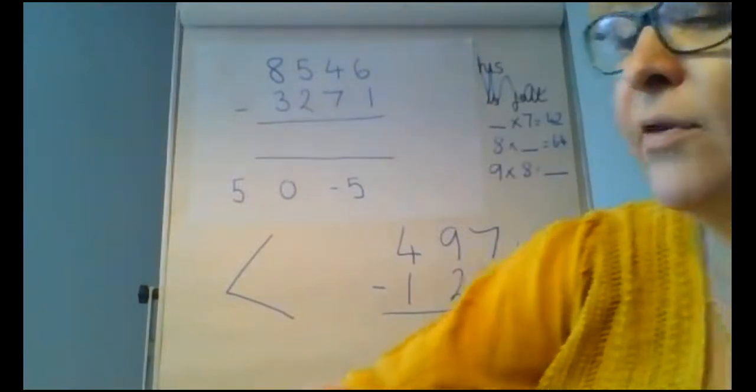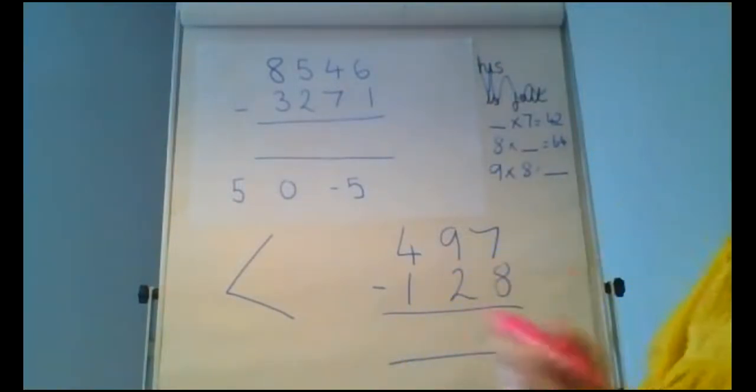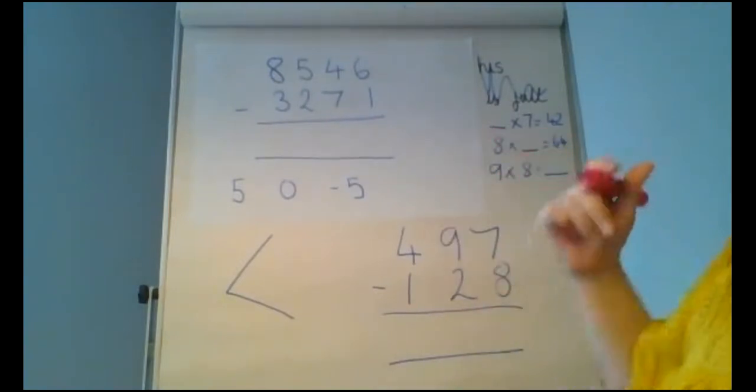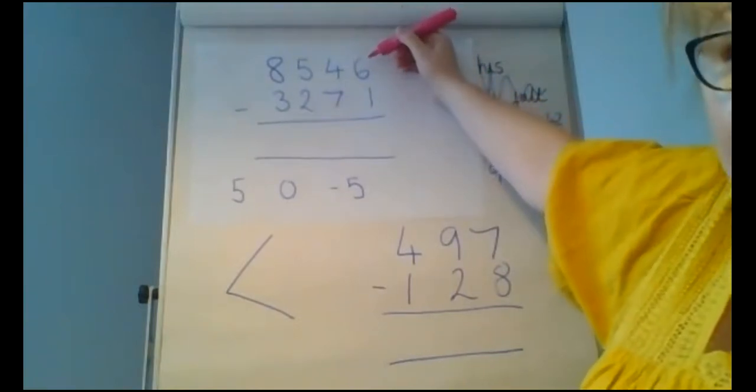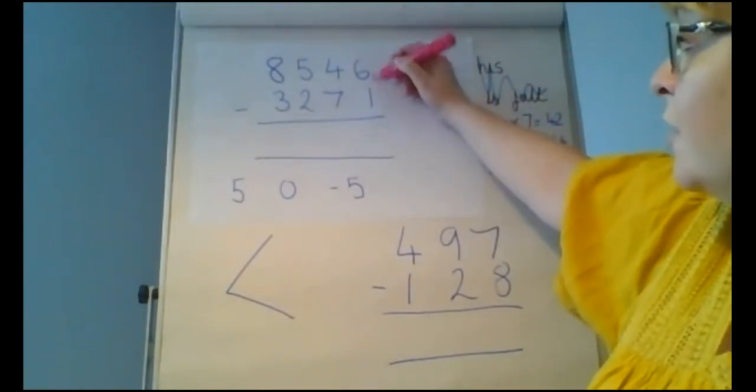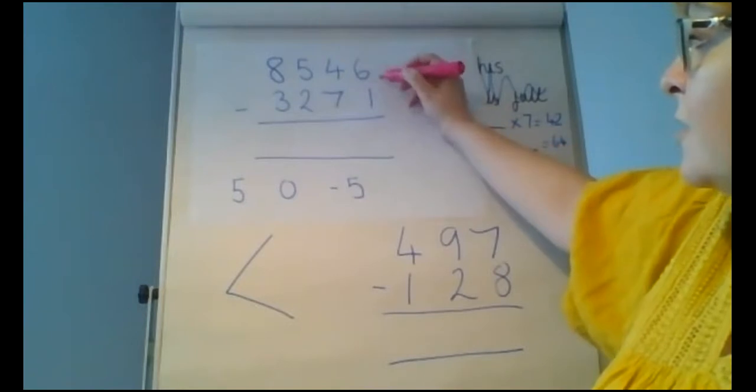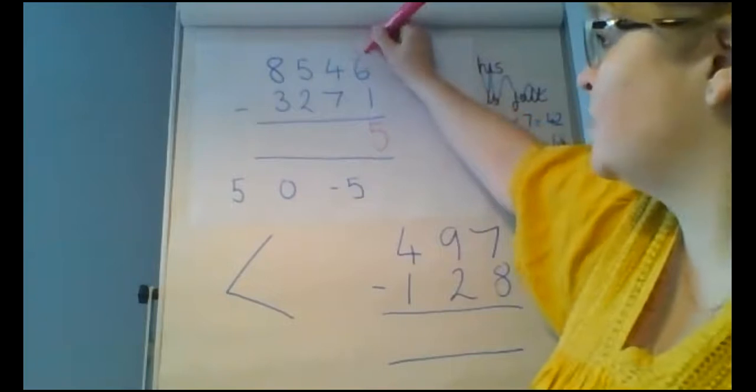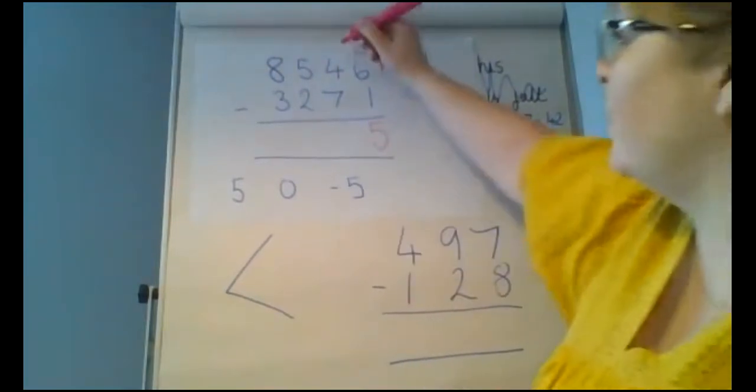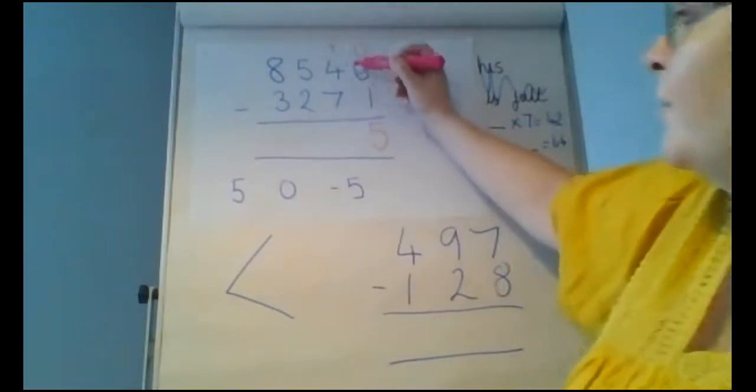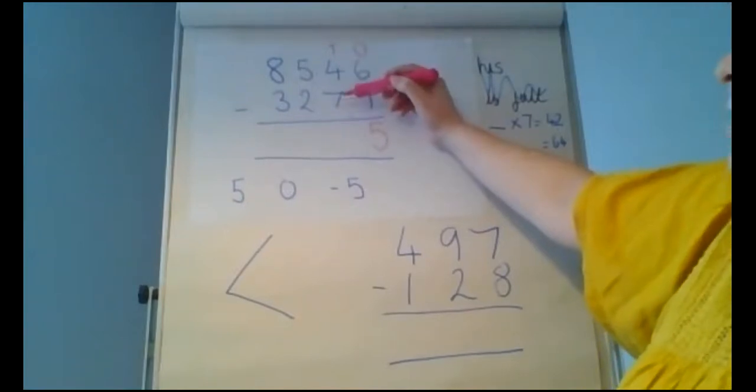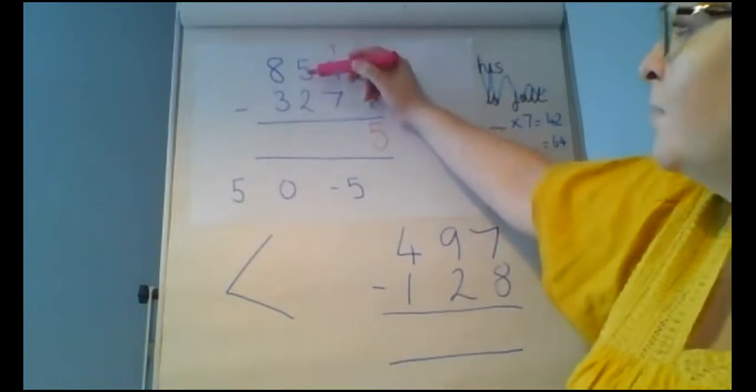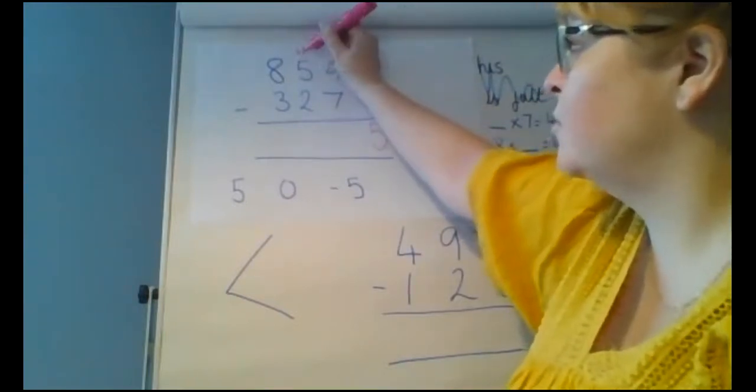So 8,546, take away 3,271. So this is a revision of what you were doing last week. So 6 take away 1, we can do because 6 is larger than 1. So we have five ones. Remember, this is our ones column. Now in terms of this, we're going to talk about the fact we've got four tens, take away seven tens. Well, we can't do four tens, take away seven tens. So we're going to jump over to our hundreds column.